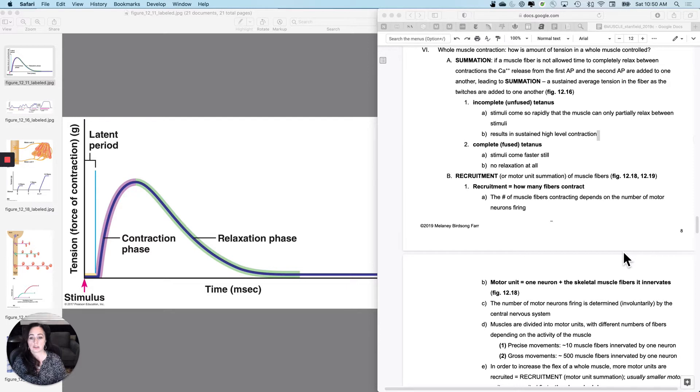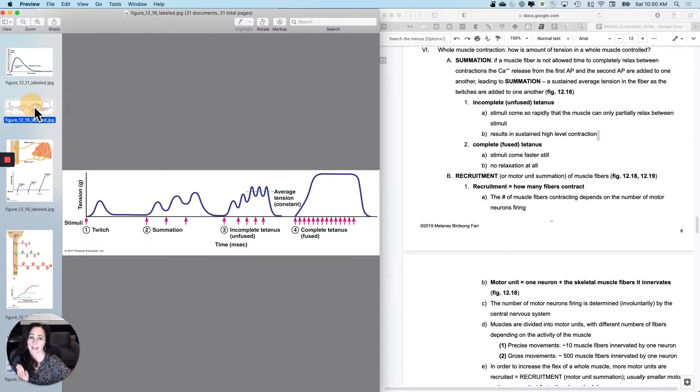First we have to look at what happens in a single fiber because a single fiber can have different degrees of contraction as well. So the concept of summation is what we're coming up with right now. This was a single muscle twitch. But now I want to talk about how you can get one muscle fiber to contract minimally, maximally, or somewhere in between. This concept is called summation.